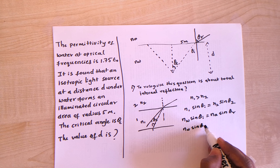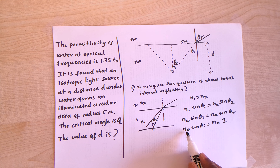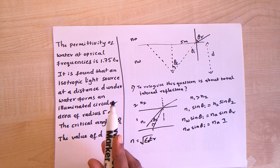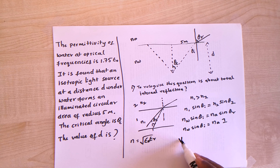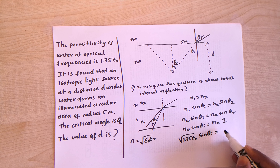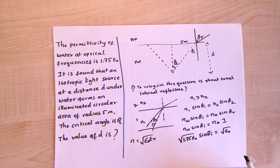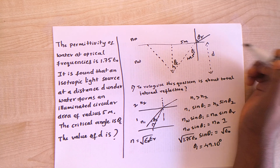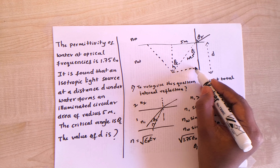The refractive index of water is the square root of its permittivity, which is given as 1.75 epsilon-naught, so n_w = sqrt(1.75). And n_air = sqrt(epsilon-naught), which is just 1. Inserting into the equation: sqrt(1.75) sin(theta_i) = 1. Calculating this gives theta_i = 49.1 degrees.